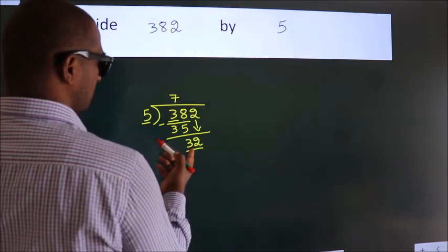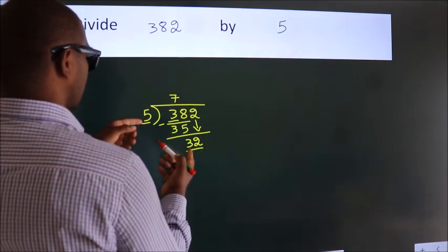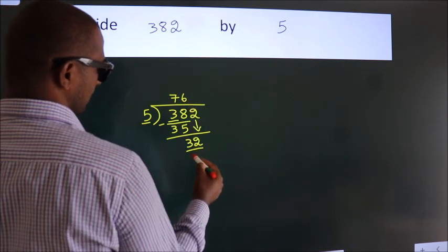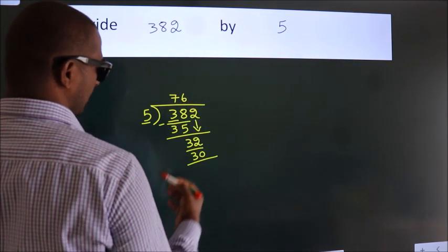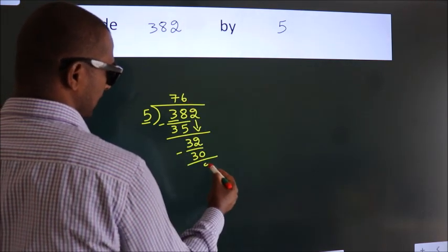A number close to 32 in the 5 table is 5 times 6 equals 30. Now we subtract. We get 2.